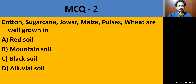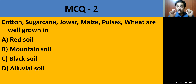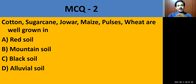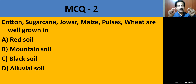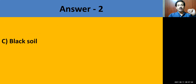MCQ question number 2: Cotton, sugarcane, jowar, maize, pulses are well grown in — red soil or mountain soil, black soil or alluvial soil? If you concentrated on the first MCQ, you can definitely answer this one. The correct answer is black soil, because of its fine clay particles and moisture retention capacity.